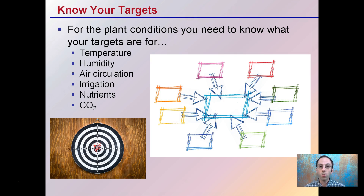What areas can you control and what should you be targeting? In no particular order: temperature, humidity level, air circulation, irrigation, nutrient use throughout the growth cycle, and carbon dioxide concentration. All of these come together to make a successful grow room. If any one of these gets way out of control it can significantly reduce yields and cause the others to be of less importance. You're only as strong as your weakest target condition in the environment.